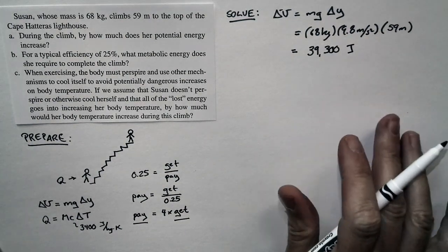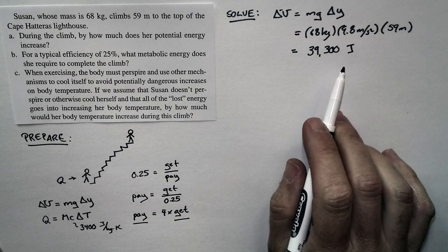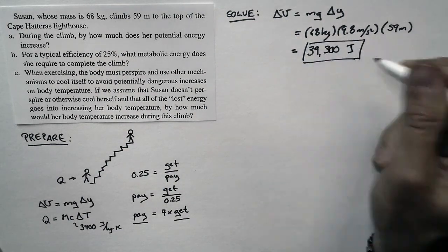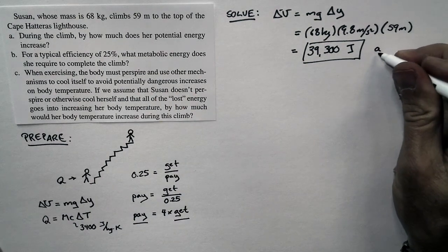Since this is an intermediate stage in the calculation, I'm going to keep extra significant digits. That's the solution to part A. That's how much her potential energy increases.